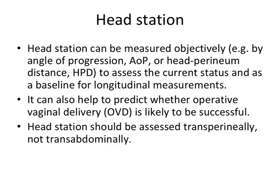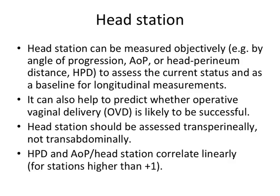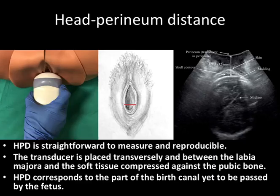Head station should be assessed transperineally. Head progression distance and angle of progression, or head station, correlate linearly. Head perineum distance is straightforward to measure and reproducible. The transducer is placed transversely between the labia and the soft tissue is compressed against the pubic bone. HPD corresponds to the part of the birth canal yet to be passed by the fetus.